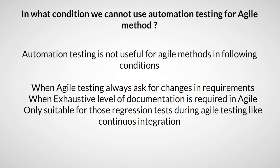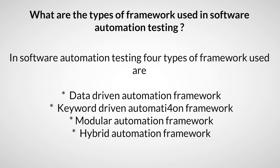In what condition can we not use automation testing for the agile method? Automation testing is not useful for agile methods in the following conditions: when agile testing always asks for changes in requirements, when an excessive level of documentation is required in agile, and it is only suitable for regression tests during agile testing, such as continuous integration.